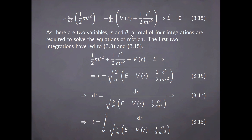As there are two variables r and θ, a total of four integrations are required to solve the equations of motion. The first two integrations have led to results 3.18 and 3.15, which are the conservation of angular momentum and the conservation of energy. From the conservation of energy we can perform a further integration: isolating the radial velocity, the differential of time equals the differential of radius divided by this quantity, and we can formally integrate this to obtain time as a function of radius, given by the quadrature shown here. In principle, this result can be inverted to obtain the radius as a function of time.